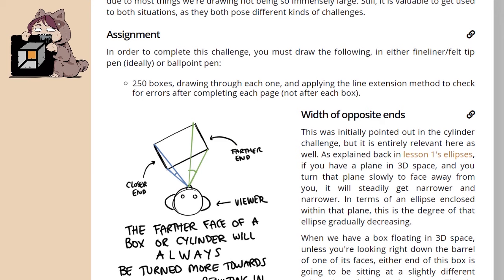So in order to complete this challenge, you must draw the following in either fine liner, felt tip pen ideally, or ballpoint pen - don't use ballpoint: 250 boxes, drawing through each one and applying the line extension method to check for errors after completing each page, not after each box.